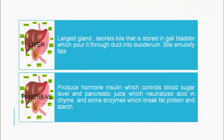Now we move on to the liver — a large brown-colored gland visible in the figure. Besides its digestive function, it plays many important roles in the body. It secretes bile, which is stored in the gallbladder — the green-colored structure beneath the liver. Bile is not an enzyme; it is a salt that helps in the emulsification of fat.